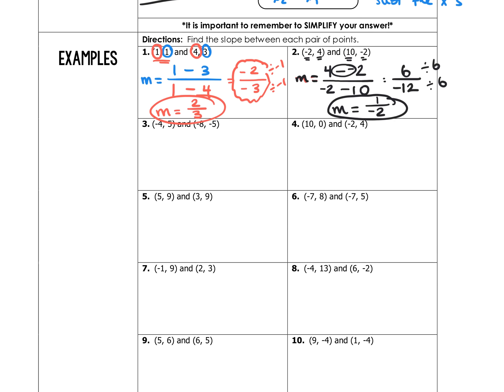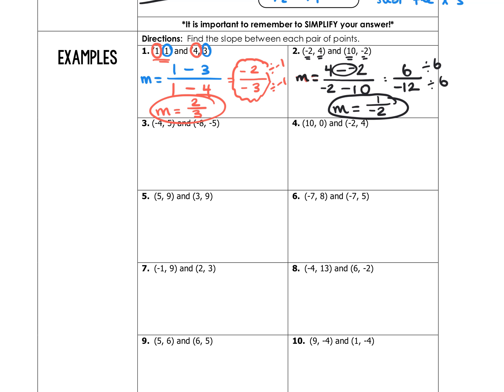Example 5: M equals 9 minus 9 over 5 minus 3. The numerator is 0, and 0 divided by 2 equals 0. So M equals 0, meaning this is a horizontal line.